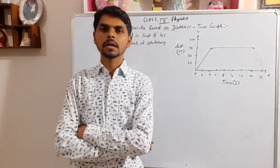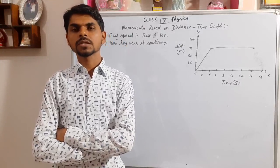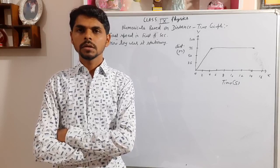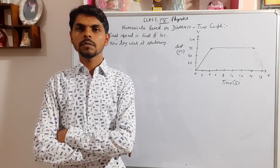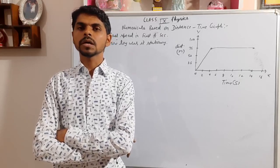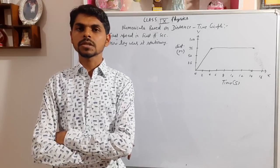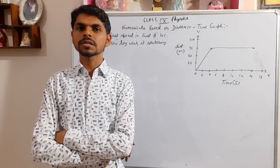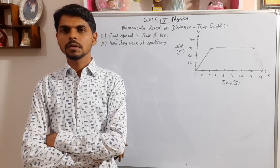Hello everyone, welcome to the physics class. Based on the previous lecture about distance-time graphs, we discussed three cases: when the body is stationary, in uniform motion, and in non-uniform motion. We also studied how to calculate the speed of a body from a distance-time graph. Today we are doing numericals based on distance-time graphs to find the speed of a body.